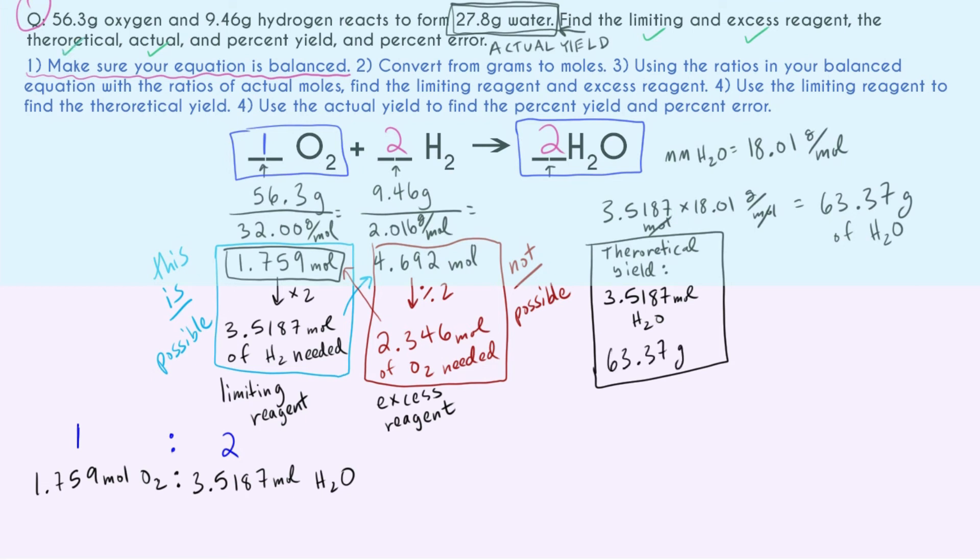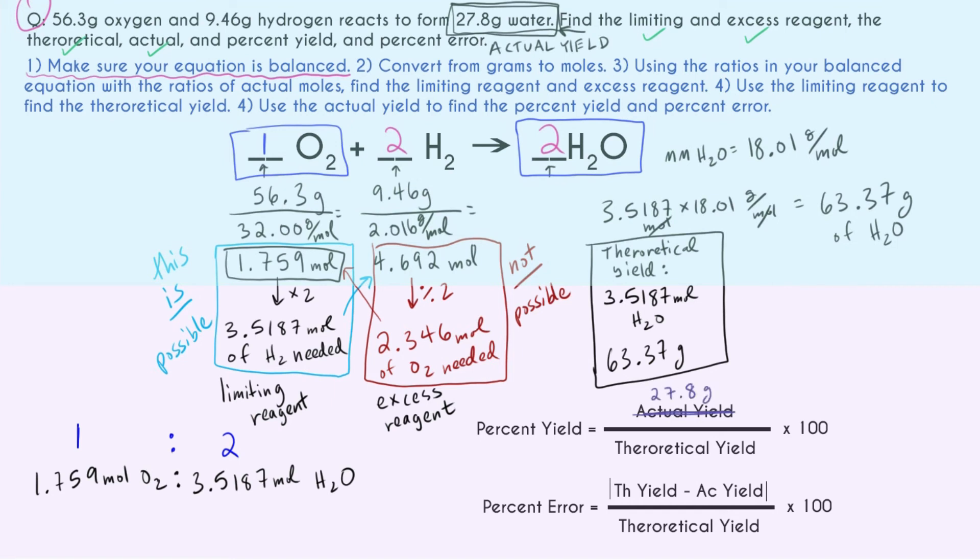We are close. Now all we have is percent yield and percent error. And both of these are just formulas that we plug into. So in some ways, they're less conceptually difficult than what we've done before. Our percent yield is just our actual yield divided by our theoretical yield times 100. Makes sense, right? We just want to kind of figure out what percent of what we could have made did we actually make? So plugging in. Remember, 27.8 grams just comes from what they gave us in the problem. 63.37 grams is what we just found to be the theoretical yield. So let's divide those and multiply by 100. And we get 43.9% as our percent yield. We made a chunk of what we could have made, but not even over half. Not a great percent yield.